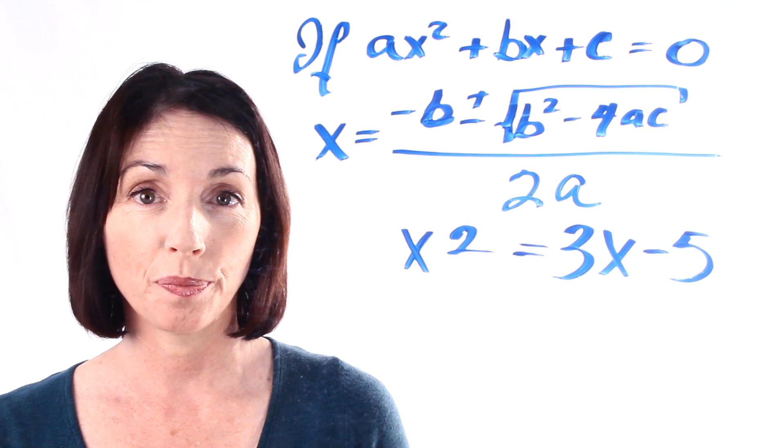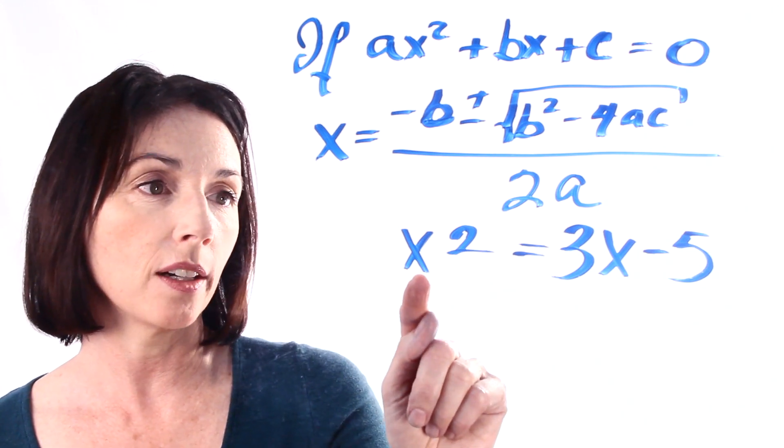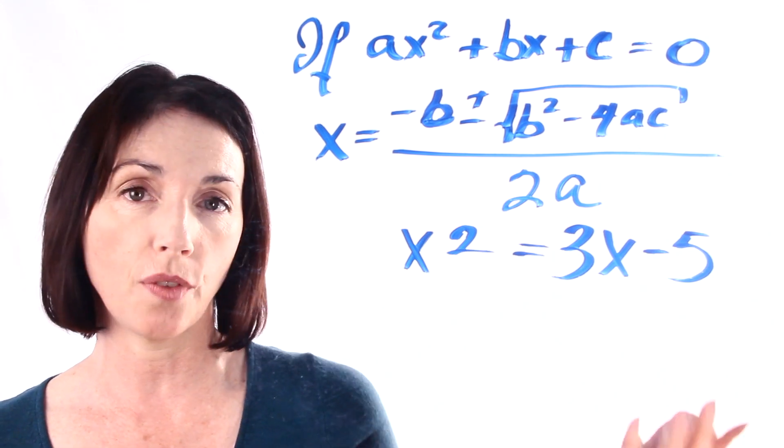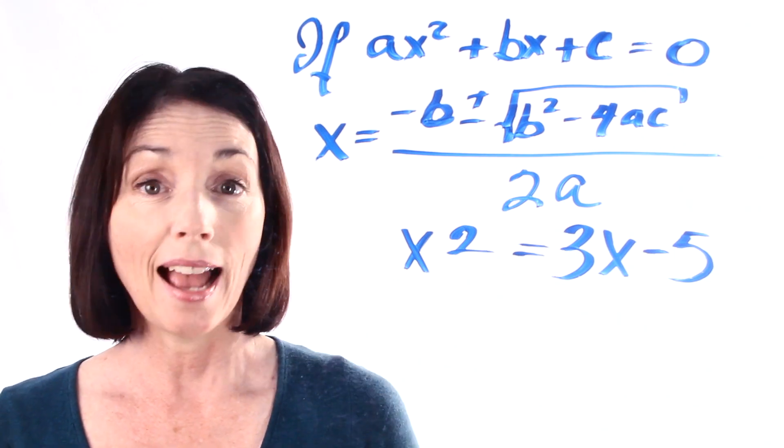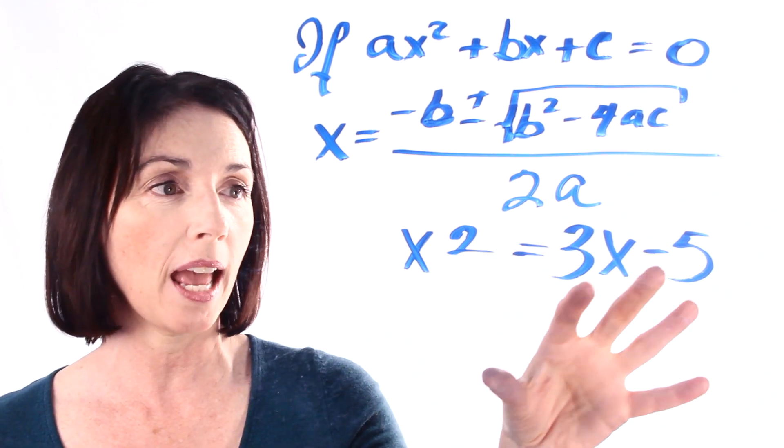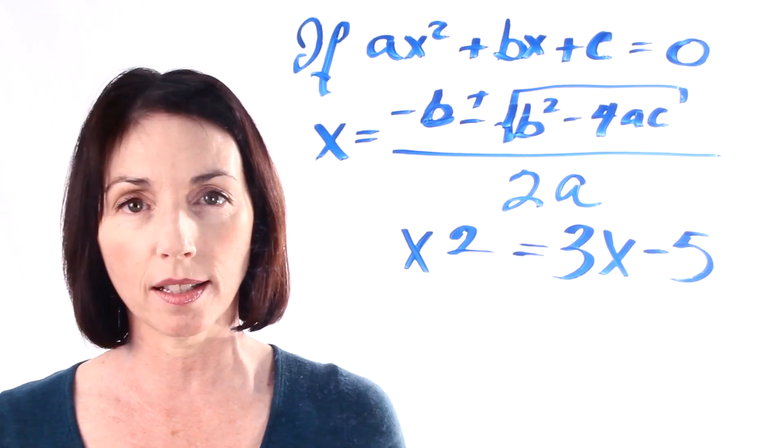So let's look at an example. We have this equation right here, x squared equals 3x minus 5. So is that in the right form to use the quadratic formula? Actually it's not because we don't have all the terms on one side and they're not set equal to zero.